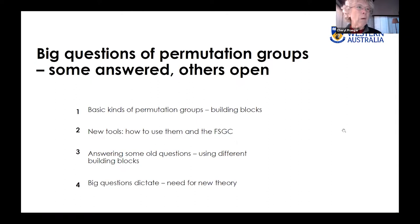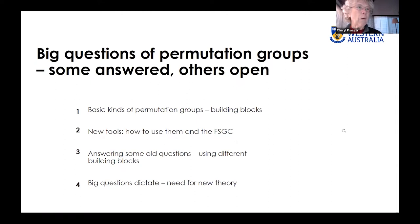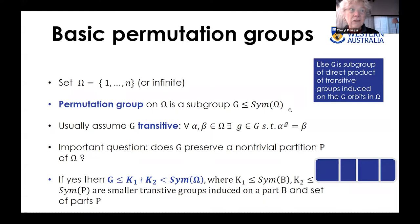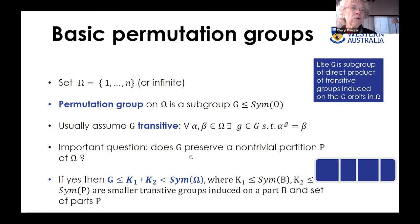To start off, we'll have a set omega that we're acting on. If it's finite, let's say it's the numbers one up to n — though it might at the beginning be infinite. We're interested in permutation groups on omega, which are just the subgroups of the symmetric group of all permutations of omega. Usually we'll take the group to be transitive, so for all two points in omega there will be at least one permutation in G taking alpha to beta. One important question we might next ask is: does G preserve a non-trivial partition of omega?